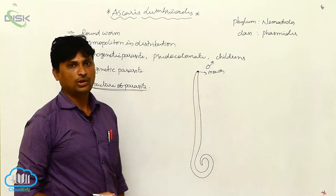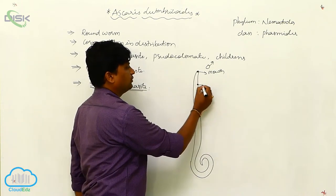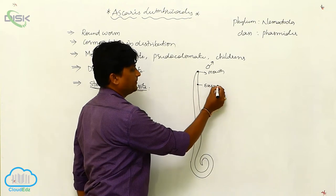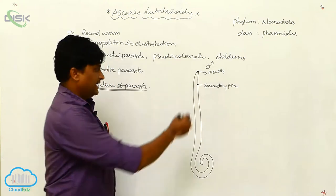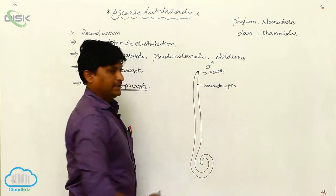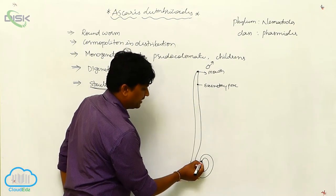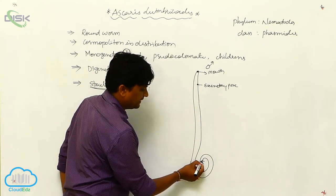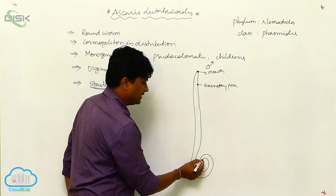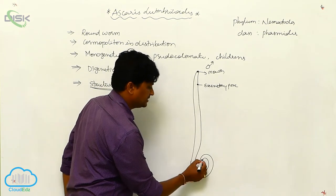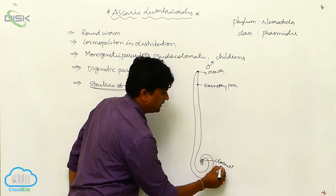Just beneath the mouth area, there is a small pore called the excretory pore. At the posterior part, the tail is coiled. There are copulatory spicules present, and there is also a small aperture called the cloacal aperture.